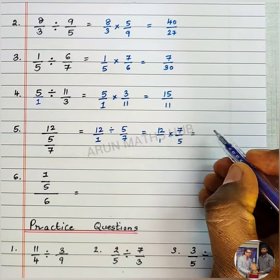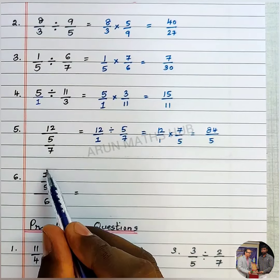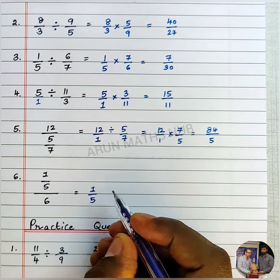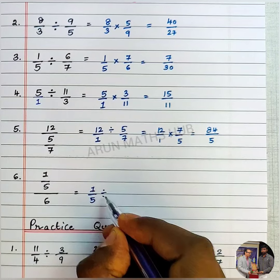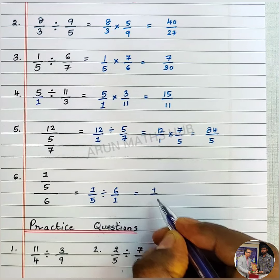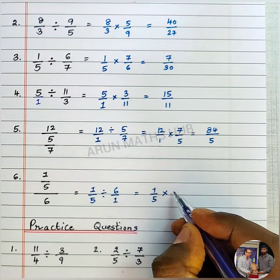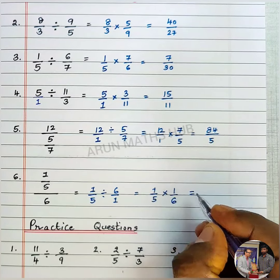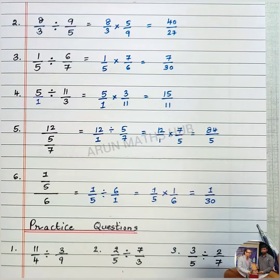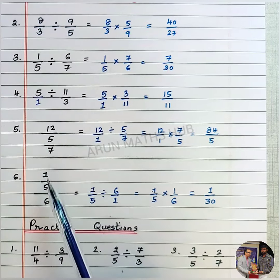Here a fraction divided by a whole number: 1/5 divided by 6. Now 6 I will write as 6/1. Now 1/5, division becomes multiplication, 6/1 becomes 1/6. So 1 into 1 is 1 divided by 5 times 6 is 30. You should be very careful. Always if you see the problems in this form, right?